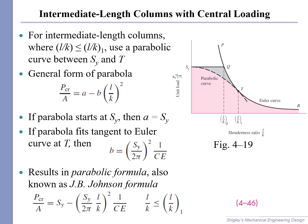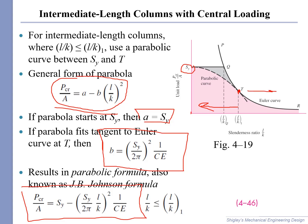So what we do is we assume that the parabolic curve has this general form where the critical load divided by A is equal to A minus B times L over K squared, that's the slenderness ratio squared. If the parabola starts at S_Y, then that's where L over K is equal to zero, and so A is simply S_Y. To find B, we simply plug into the Euler buckling equation the value of this critical stress equal to 1 half the yield strength. Solve using this equation to find B, and we get this result. And this is known as the JB Johnson formula, which says that for slenderness ratios to the left of L over K_1, we use the JB Johnson formula. And to the right of that, we simply use the Euler buckling formula. And of course we have to know what our end conditions are so we can solve for C.